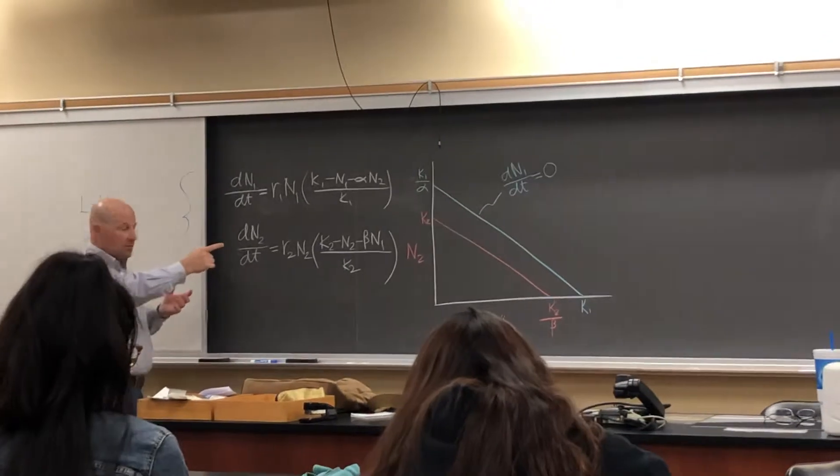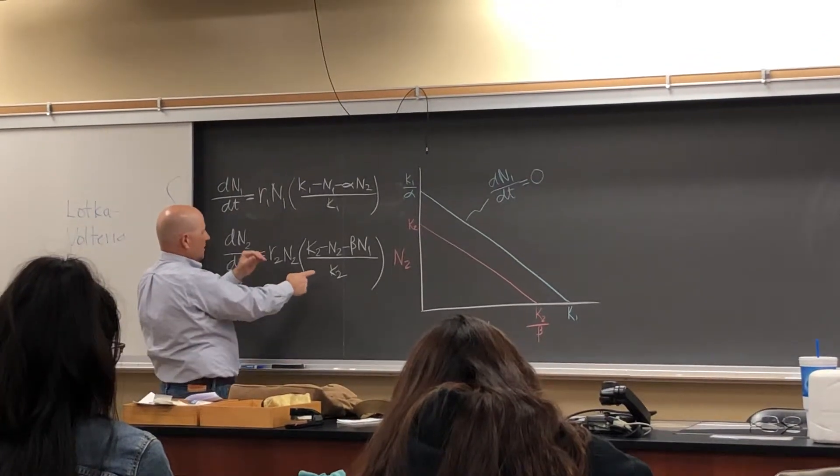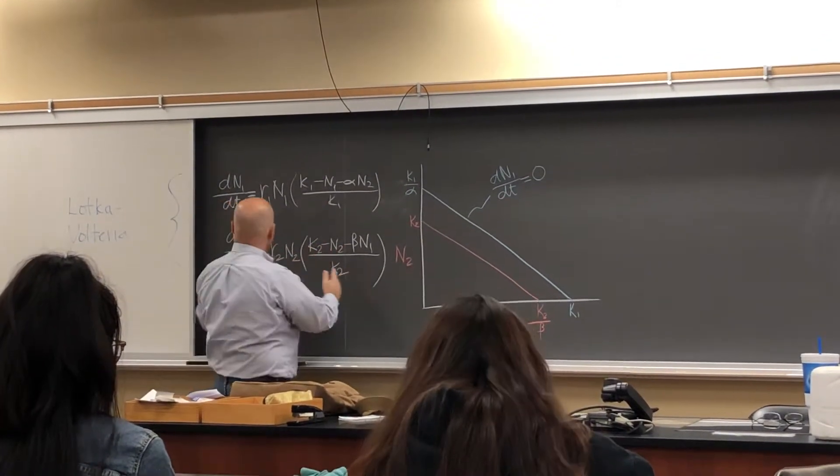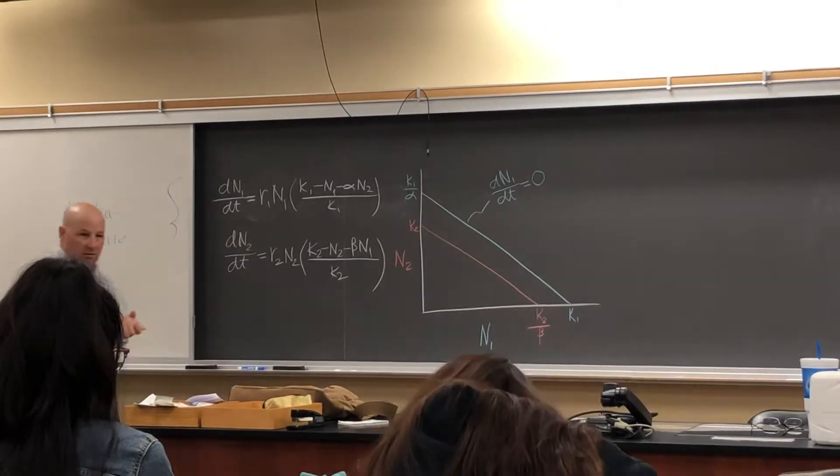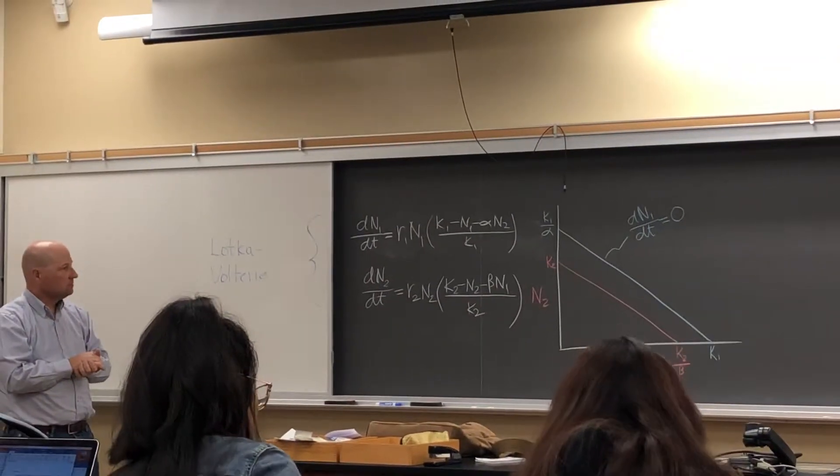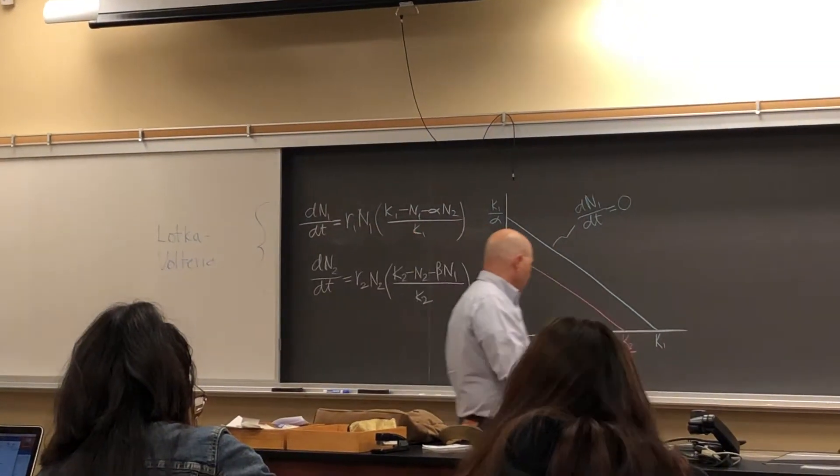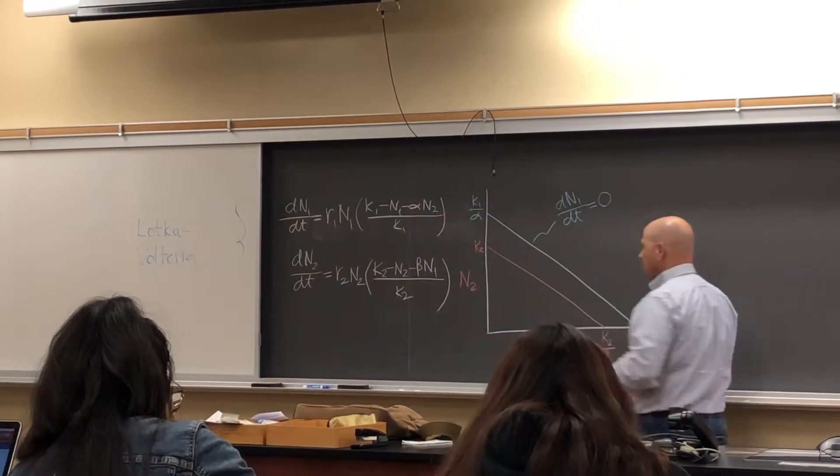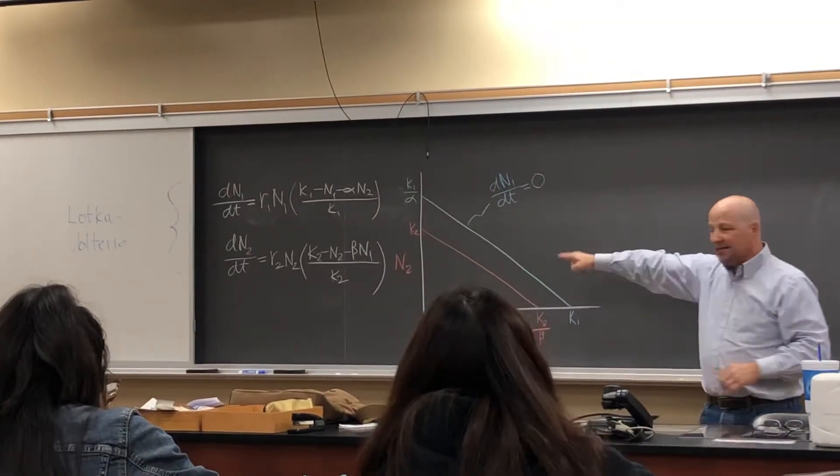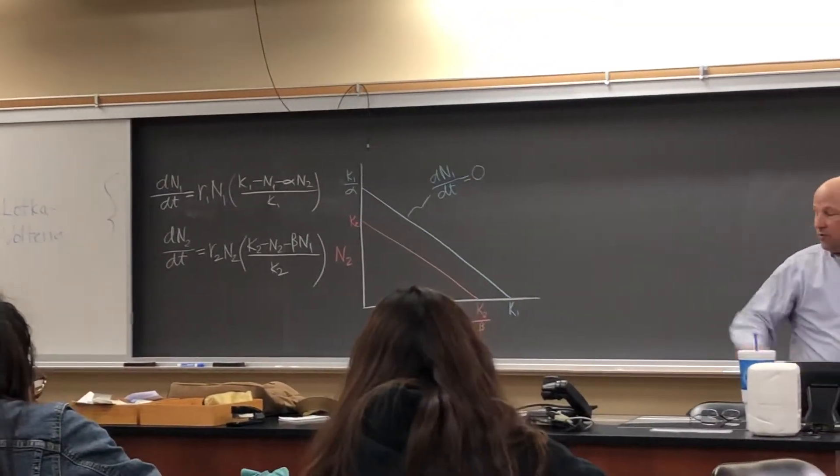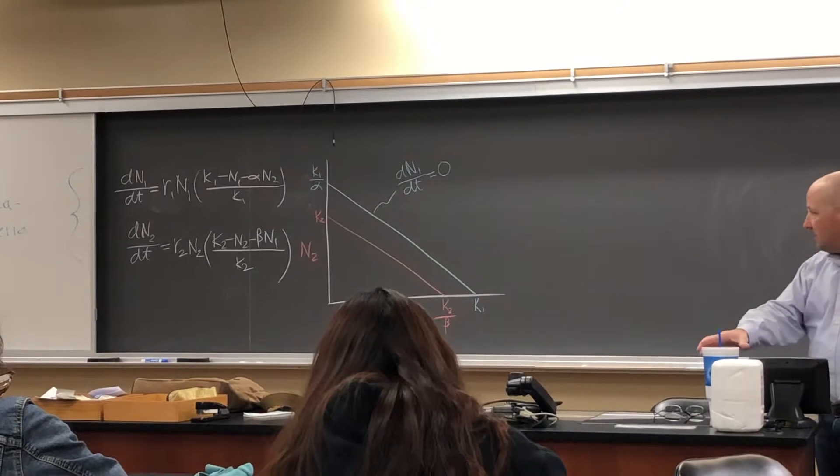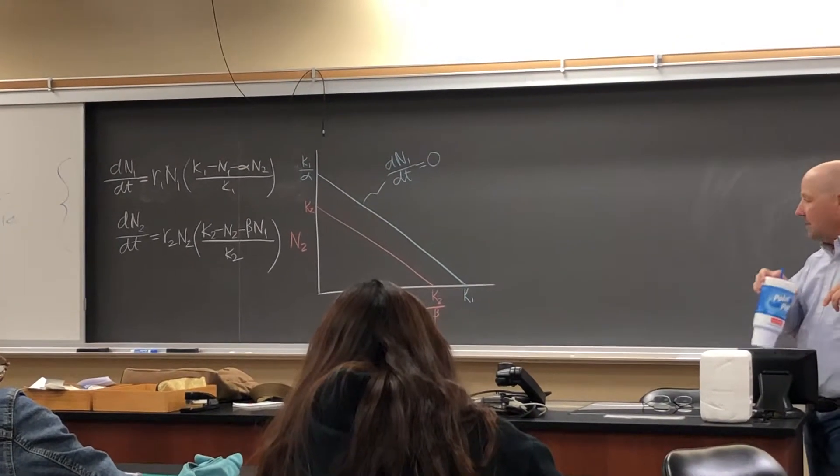And the red line represents all the values of N1 and N2 that can make this equation equal to zero. And if you remember from Thursday, in this specific case where we draw the two lines like that where they don't intersect and the blue line is on top of the red line, what is the ultimate outcome of this competition?